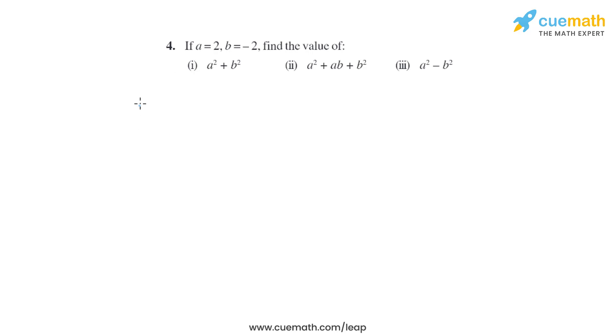Now let's take the first expression that is given, so that is a squared plus b squared. Let's put the value of a and b. So it will become 2 squared plus minus 2 squared. So 2 squared is basically 2 into 2 which is 4, and minus 2 squared is basically minus 2 into minus 2 that is plus 4.